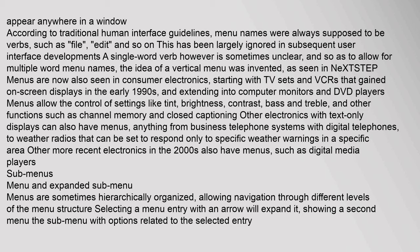A single-word verb is sometimes unclear, and to allow for multiple-word menu names, the idea of a vertical menu was invented, as seen in NeXTSTEP. Menus are now also seen in consumer electronics, starting with TV sets and VCRs that gained on-screen displays in the early 1990s and extending into computer monitors and DVD players. Menus allow the control of settings like tint, brightness, contrast, bass, and treble.